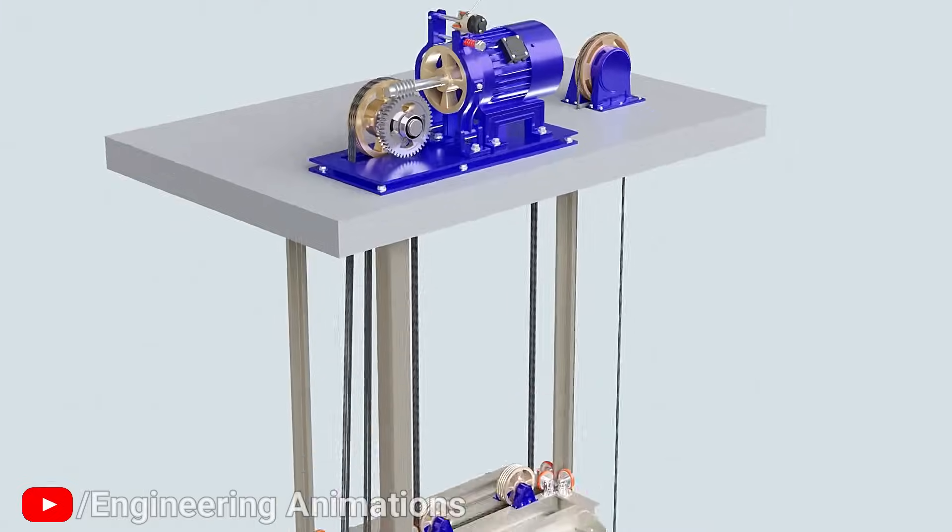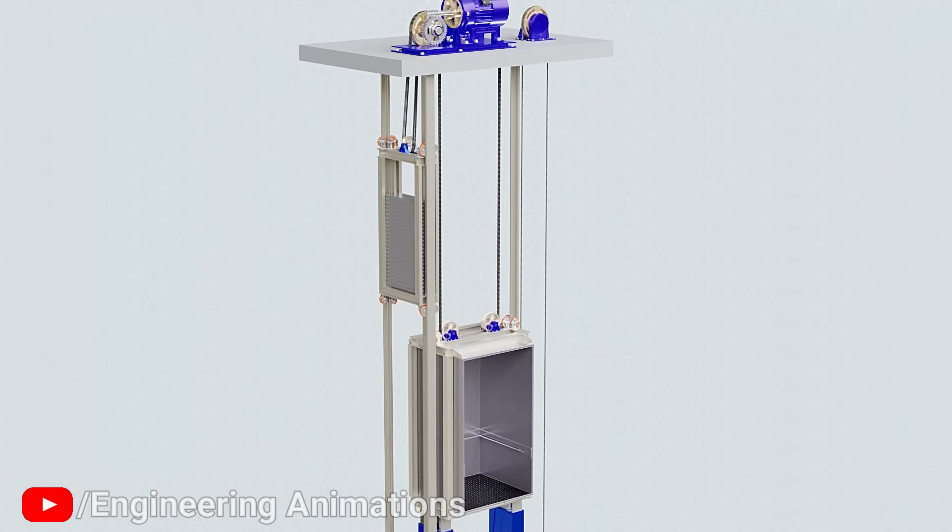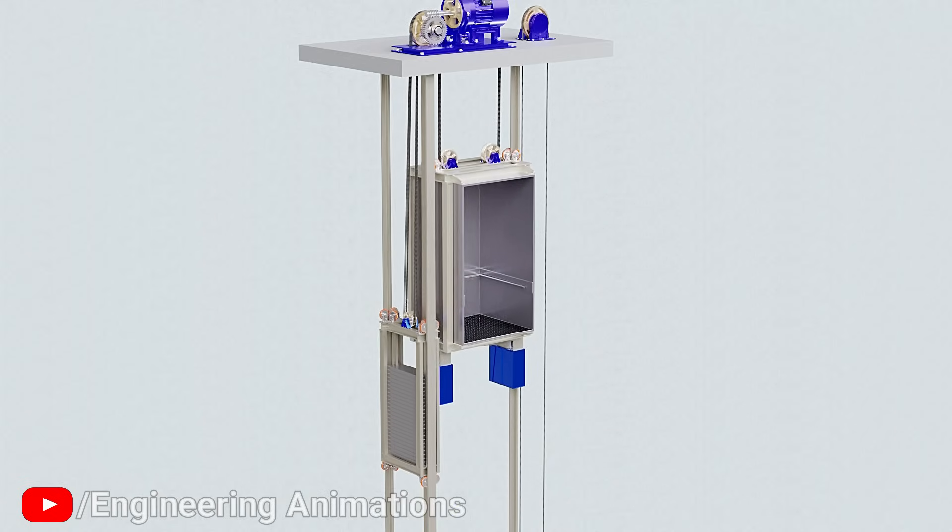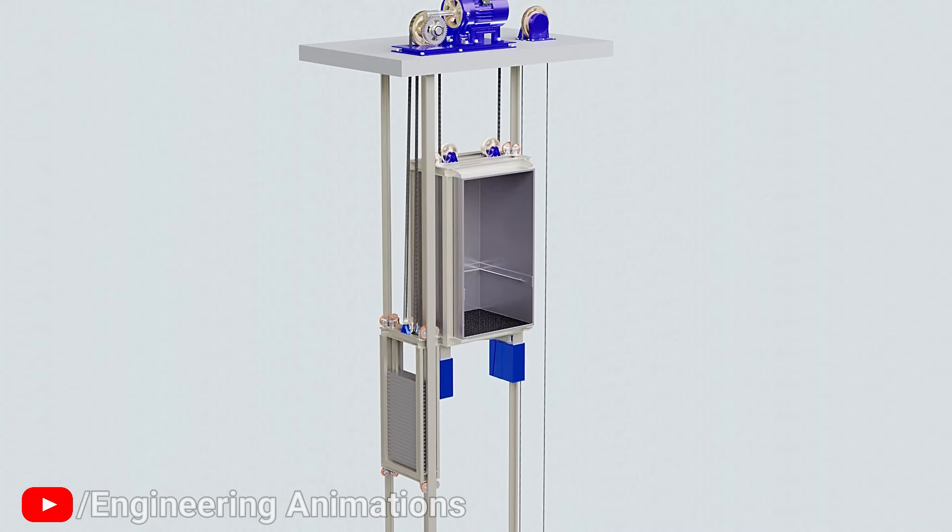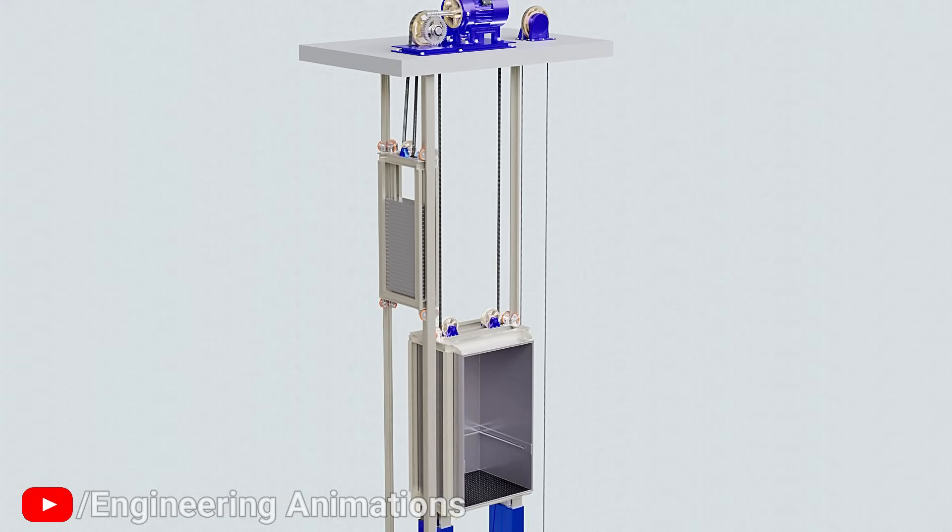First, let's discuss an integral component known as counterweight. The counterweight travels along vertical guide rails opposite to the direction of the elevator car. This component may appear to do nothing more than just rising and descending, but it in fact plays a very crucial role in the stability and energy efficiency of an elevator.